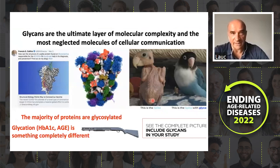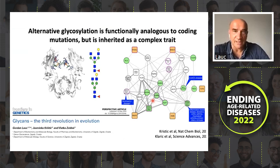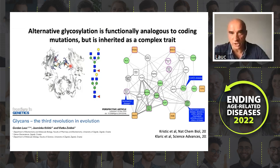One of the key aspects here is alternative glycosylation, which is adding different glycan structures to the same glycosylation site. Functionally, this is analogous to a coding mutation. A coding mutation will change an amino acid and produce a different protein, while alternative glycosylation will add a different glycan and yield a different protein structure.